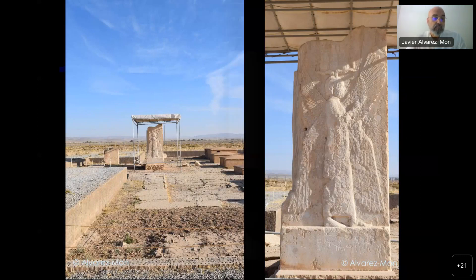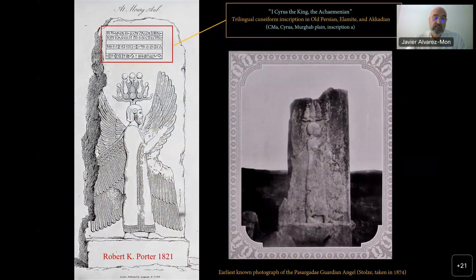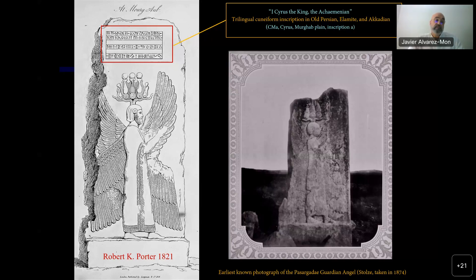At the time Robert K. Porter made his drawings in 1821, the relief included a short trilingual cuneiform inscription in Old Persian, Elamite, and Akkadian language stating 'I, Cyrus the King, the Achaemenean,' showcased above the winged guardian figure. The last person to see the inscription in place appears to have been John Usher in 1861, and by the time the first photograph of the monument was taken in 1874 by Franz Stolze, the upper section of the pillar with its inscription had been forcefully detached. Its removal must have occurred sometime between 1861 and 1874.